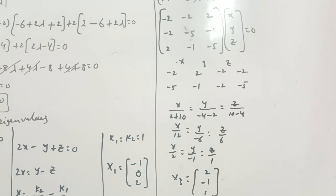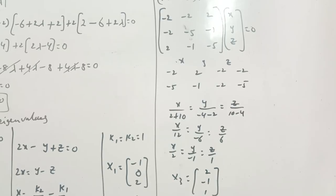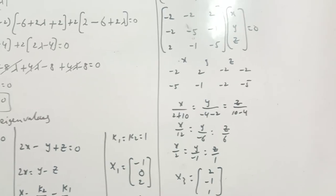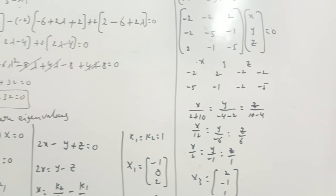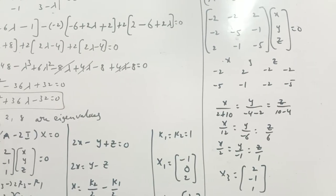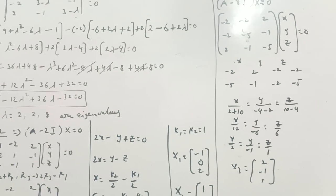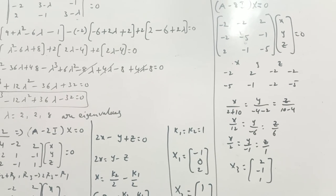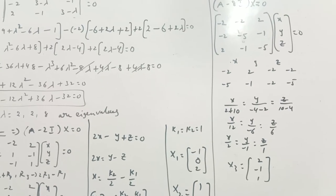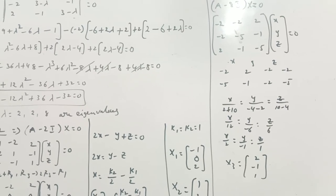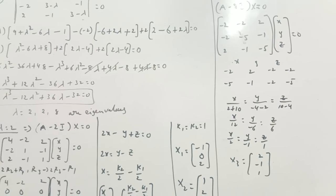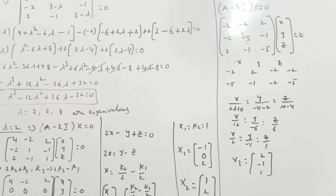So these are the corresponding eigenvectors with respect to the eigenvalues 2, 2, and 8. This is a lengthy but general problem. Like this, you have to solve similar problems.